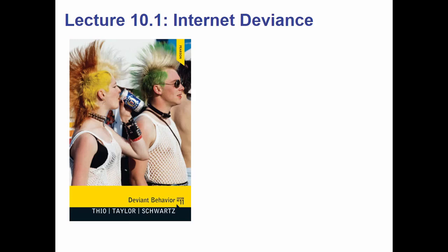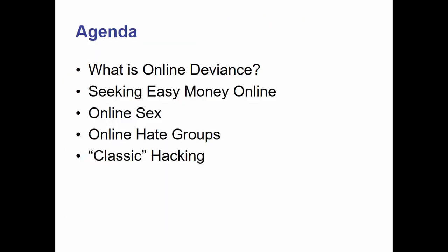Hi, y'all. This lecture is 10.1 Internet Deviance. We're going to be talking about basically the deviance that we use using the Internet and similar communication technologies. Admittedly, some of the things they talk about in this chapter are a little bit dated. This happens anytime that people over the age of 50 are put in charge of writing and editing a book about technology, but we'll get through it.